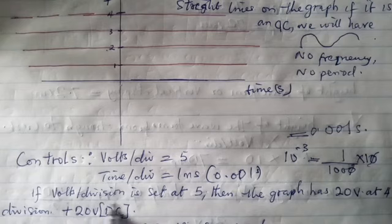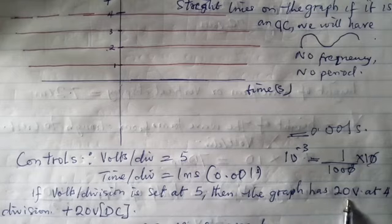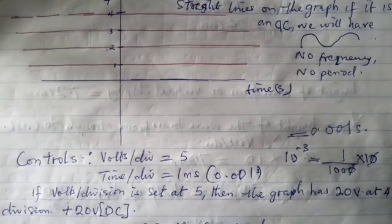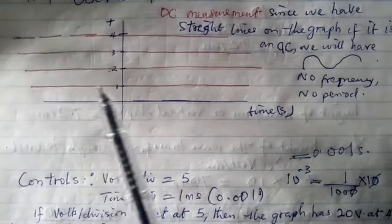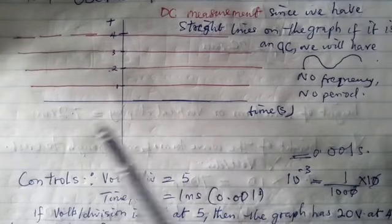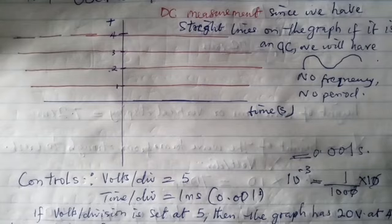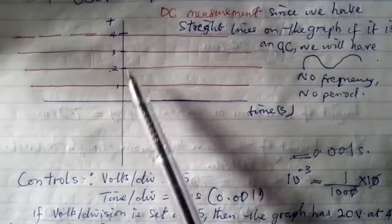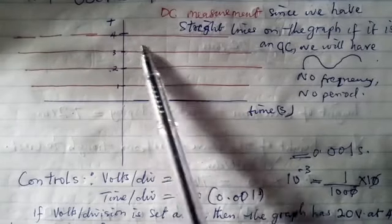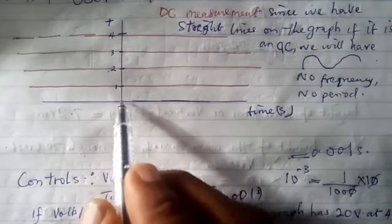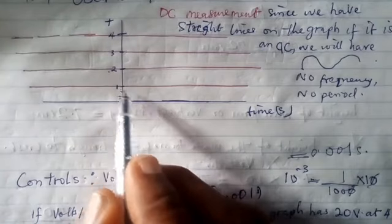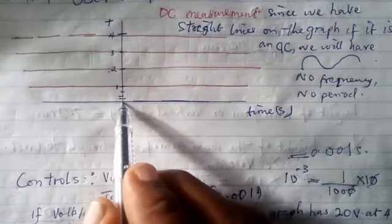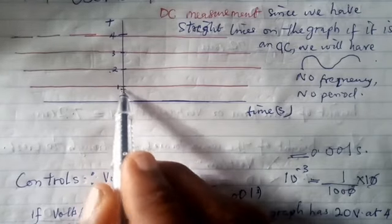If the voltage division is set at 5, then the graph has 20 volts at the fourth division — that is 20 volts in DC. Going back to this, if the oscilloscope's voltage per division is set at 5, it means that since we have 1, 2, 3, 4 — this is 4 straight divisions. And what we mean by per division is there may be other smaller divisions that make up the higher division. For example, this will be 0, 1, 2, 3, 4, then 5.